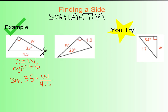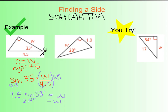Now in order to solve for W, which is our goal, we need to get it by itself — which means multiplying both sides by 4.5. They cancel on the right, and I multiply on the left. So my answer is W equals 4.5 sine 33 degrees. If you're using our class calculators, enter 4.5, then hit the sine button — it's 2 above the 7 — then 33, close your parentheses, and hit enter. Your answer is W equals 2.451.